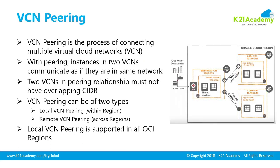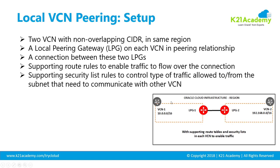VCN pairing allows you to connect multiple virtual cloud networks. When you connect two VCNs within the same region, that's called local VCN pairing. In the diagram, VCN1 and VCN2 are both in a single region and talk to each other using a component called a local pairing gateway. You create one local pairing gateway in VCN1 and another in VCN2, and they connect to each other — that's how one VCN can communicate with another within Oracle public cloud.